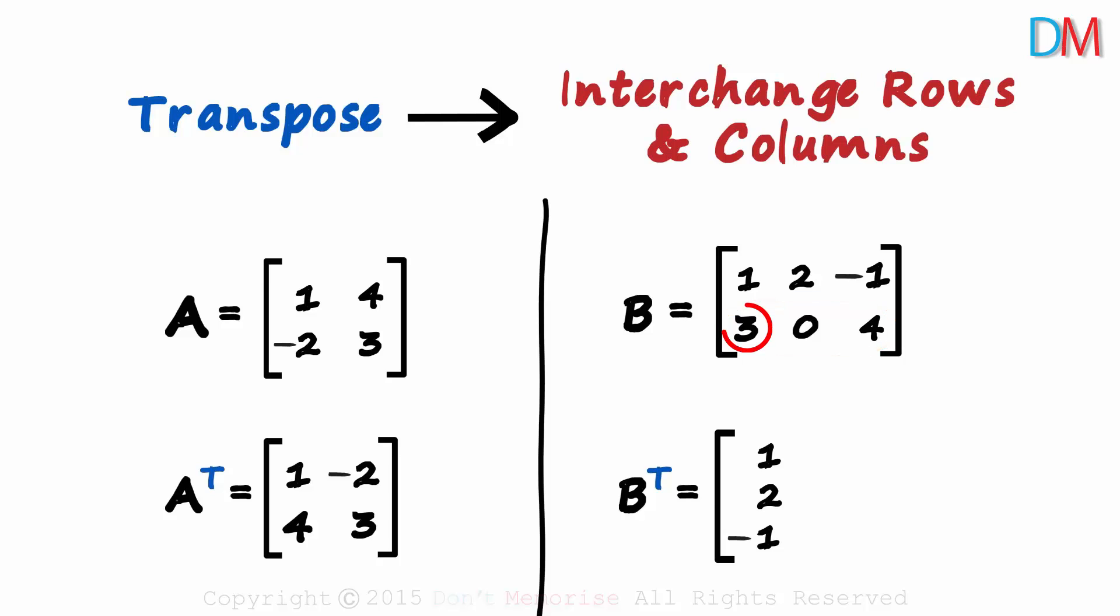The second row 3, 0, 4 will become the second column of the transpose. The rows and the columns were interchanged. If we are using a cement bag approach, this is how it will look. The first row falls to become the first column, and the second row falls to become the second column.